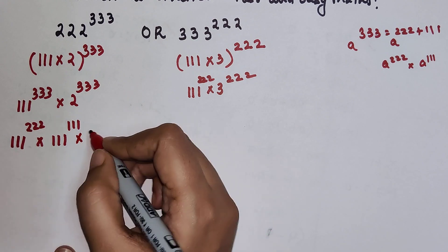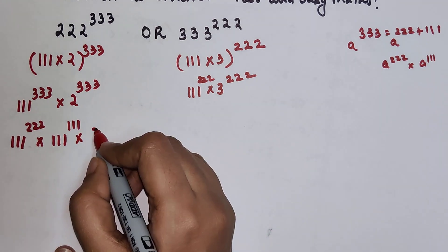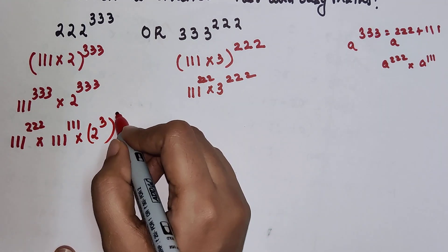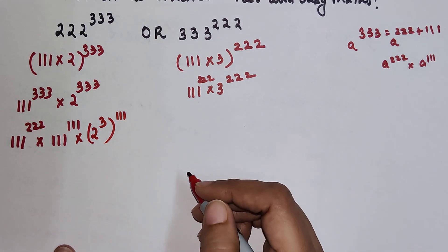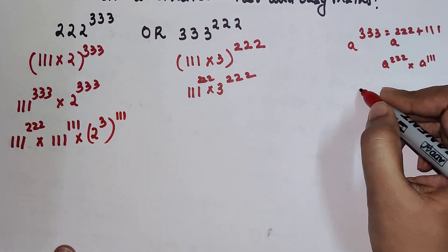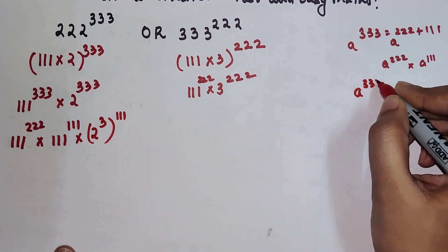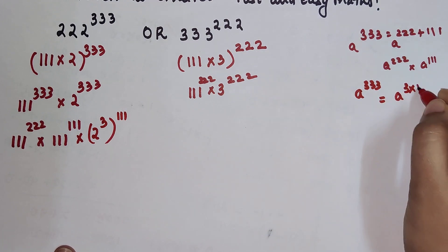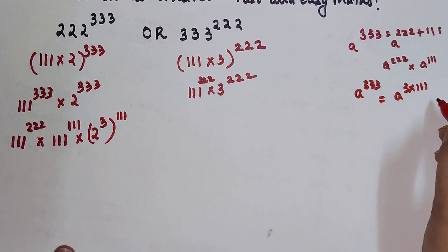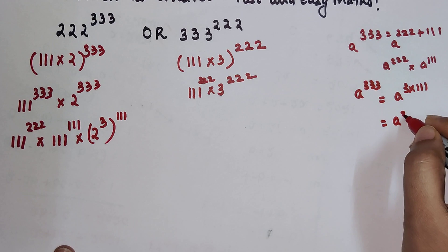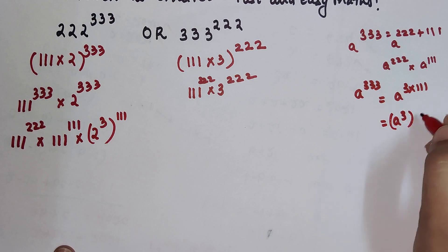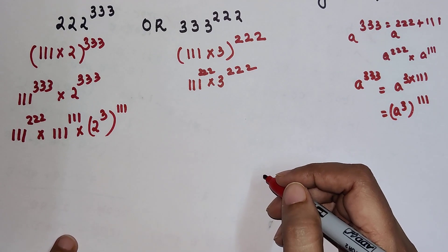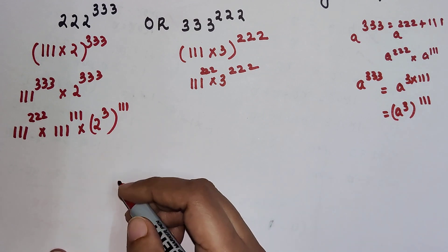Also, 2 raised to 333 can be written as 2 raised to 3, the whole raised to 111, because a raised to 333 is nothing but a raised to 3, the whole raised to 111. This gives us 8 raised to 111.